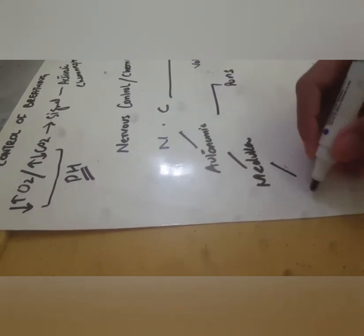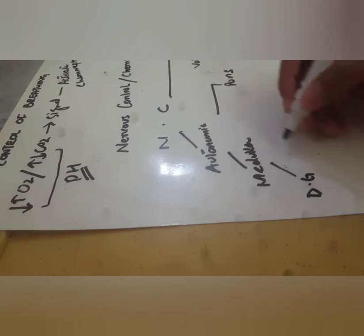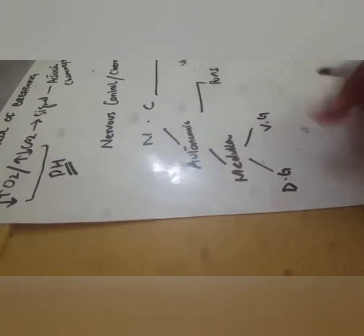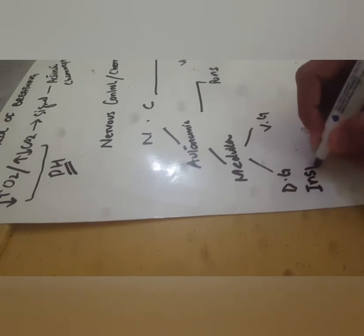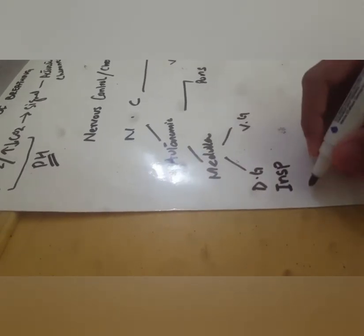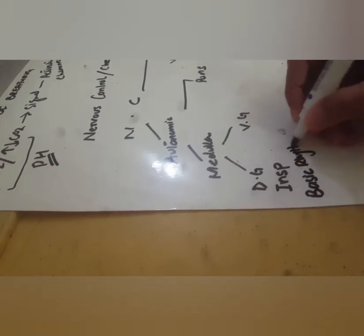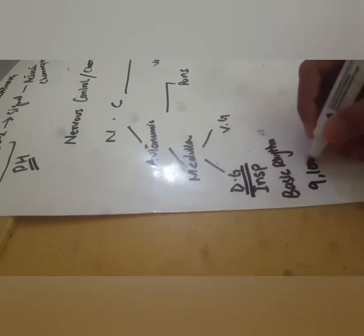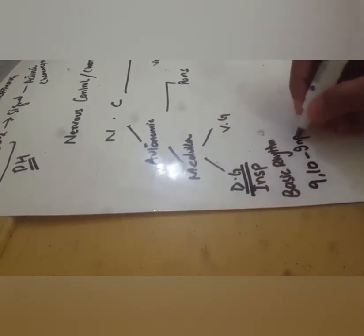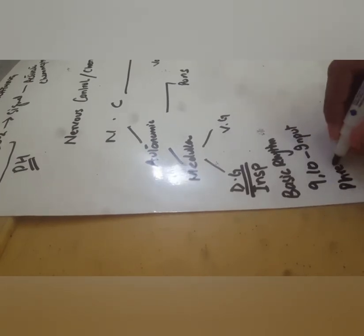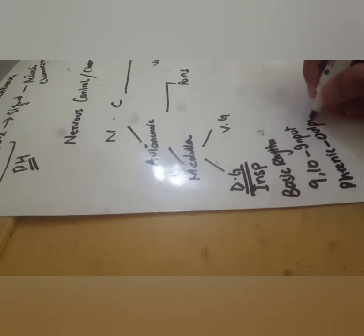For nervous control, we have autonomic control and voluntary control. In autonomic control, we have medullary control and pons control. In the medulla, we have two centers: the dorsal group and the ventral group. The dorsal group helps with inspiration and controls the basic rhythm of inspiration. Input to the dorsal group comes from the ninth and tenth nerves, and the output goes to the phrenic nerve to the diaphragm.